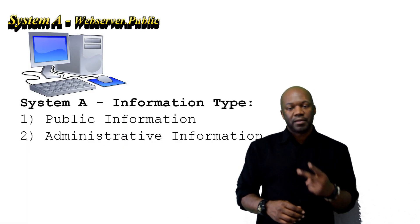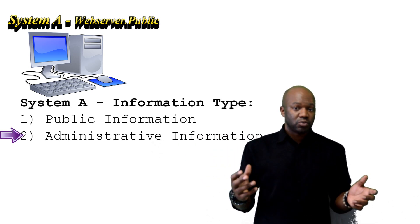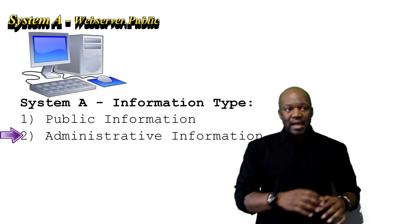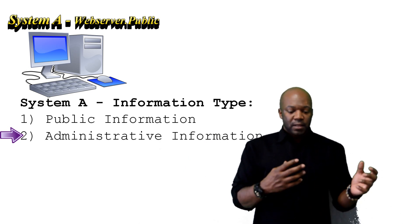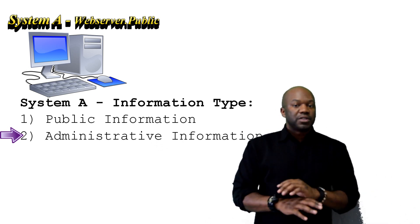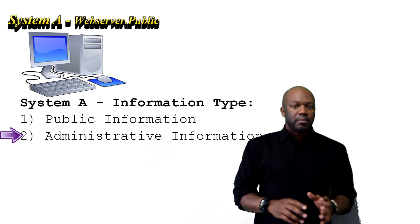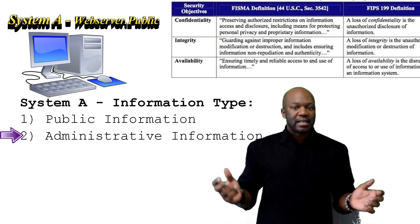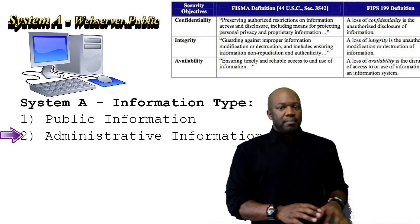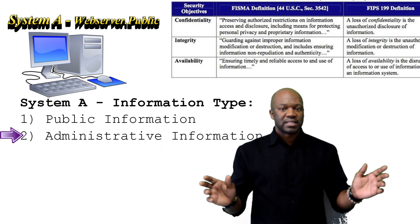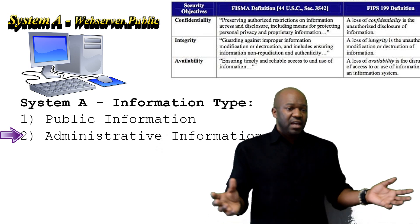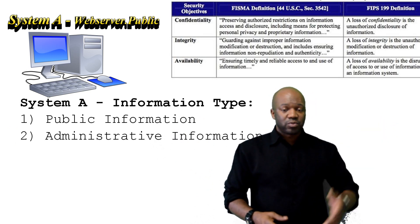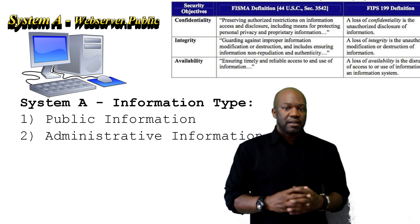Let's take it a step further. There's not just public data on there — there's also administrative data on that web server. Somebody has to administer this web server, like a webmaster who manages graphics, content, and logins with username and password. If someone got those credentials and started messing with the server — creating more admin passwords, giving them to others — would that harm us? Yes, but it's still a low impact because we already established that losing this web server is low impact. We can stand up another one and remove all usernames and passwords. So the administrative information type is still low across confidentiality, integrity, and availability.